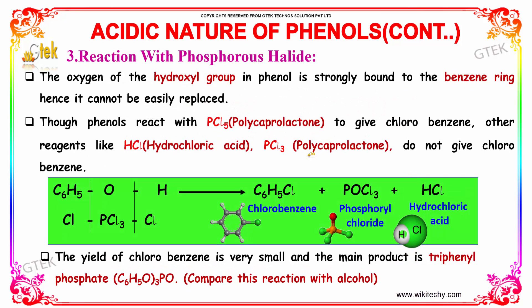Now let us study the reaction with phosphorus halide. The oxygen of the hydroxyl group in phenol is strongly bound to the benzene ring and hence cannot be easily replaced. Though phenols react with PCl₅ to give chlorobenzene, other reagents like HCl and PCl₃ do not give chlorobenzene. The reaction shows the hydroxyl group reacting with PCl₅ to form chlorobenzene, phosphoryl chloride, and hydrochloric acid.